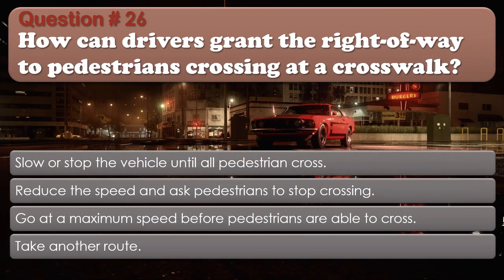Question number 26. How can drivers grant the right-of-way to pedestrians crossing at a crosswalk? Slow or stop the vehicle until all pedestrians cross. Reduce the speed and ask pedestrians to stop crossing. Go at maximum speed before pedestrians are able to cross. Take another route. The correct answer is: Slow or stop the vehicle until all pedestrians cross.